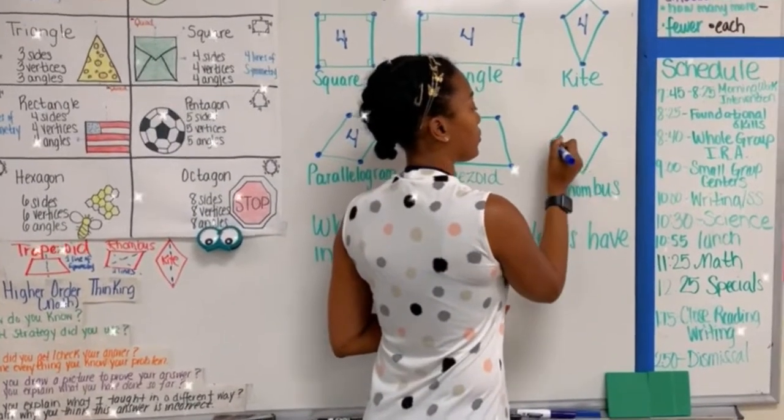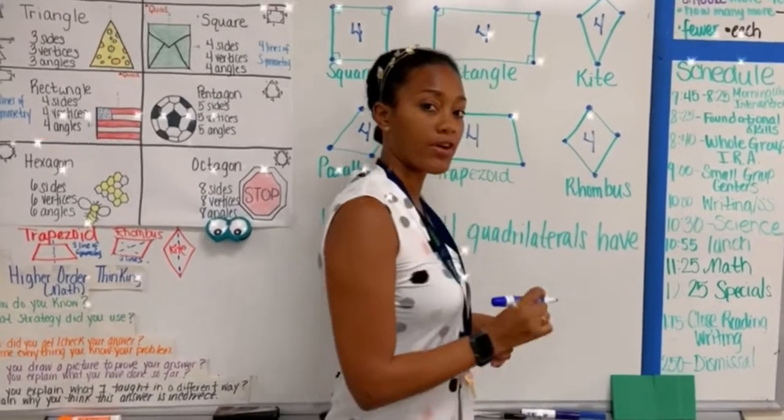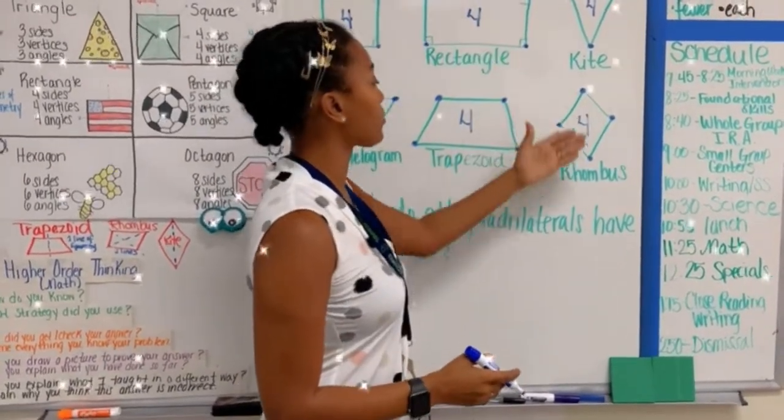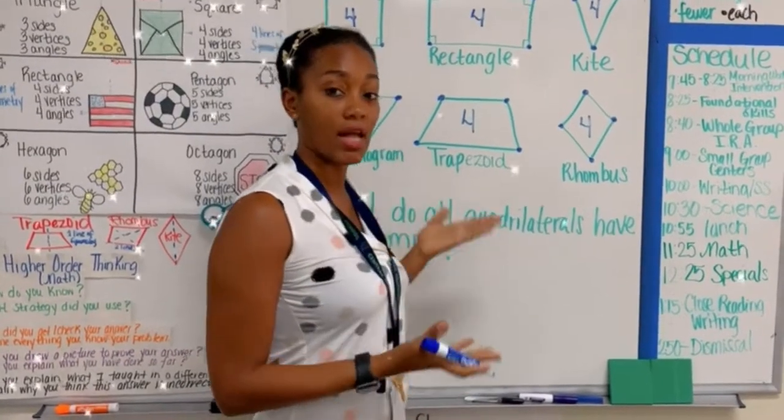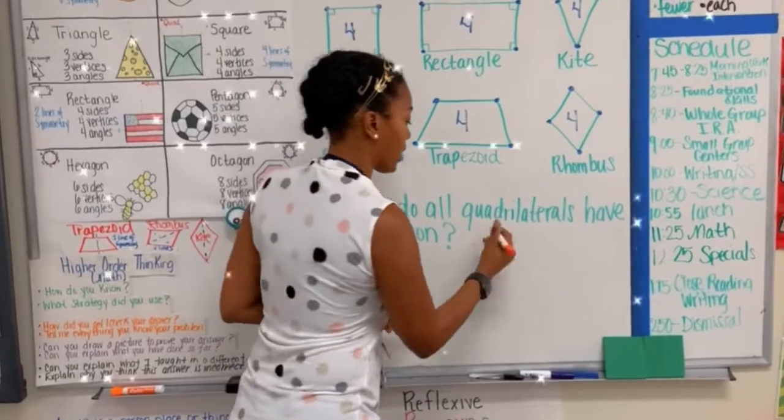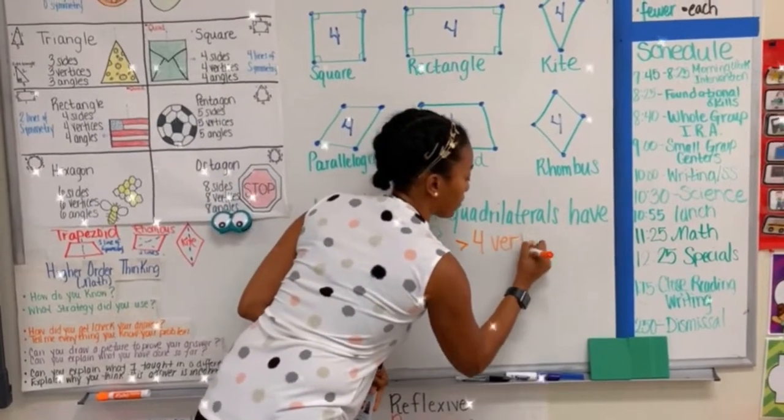And in my rhombus, I have one, two, three, four. Again, I have four vertices. So right away, what do all quadrilaterals have in common? I can tell you it's four vertices.